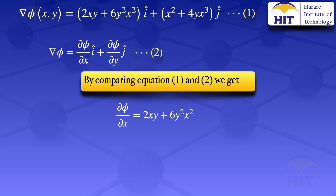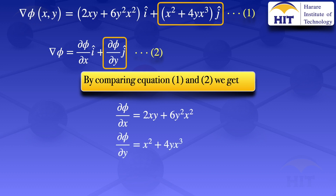Then looking at the j-component, that part should be equal to ∂φ/∂y. Therefore, ∂φ/∂y = x² + 4yx³.